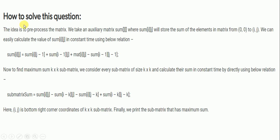Now, how to solve this question? The idea is to pre-process the matrix. We take an auxiliary matrix sum[i][j], where sum[i][j] will store the sum of the elements in the matrix from (0,0) to (i,j).